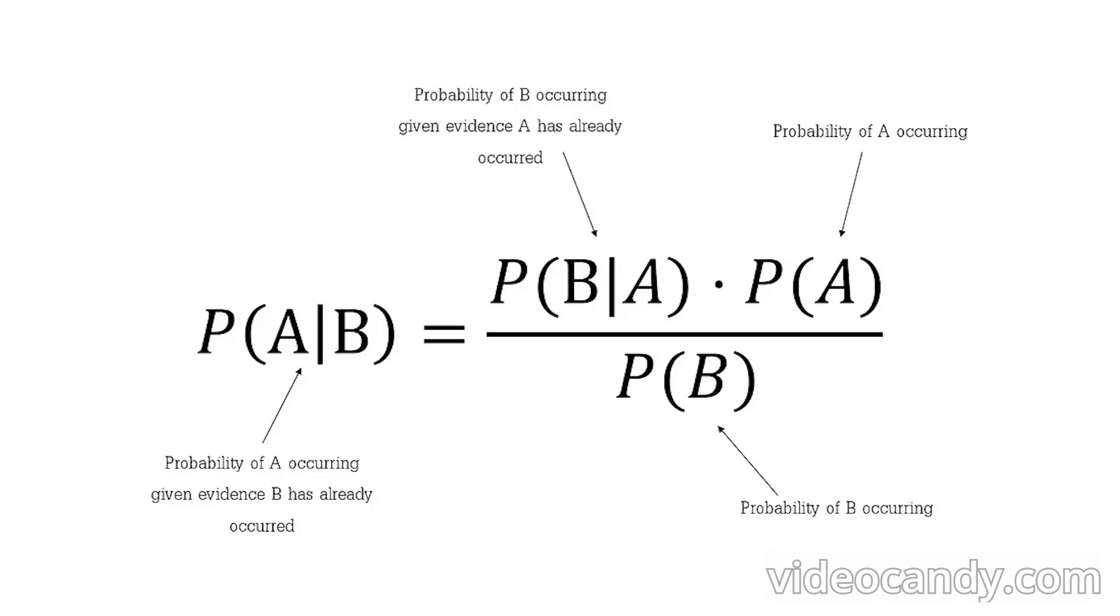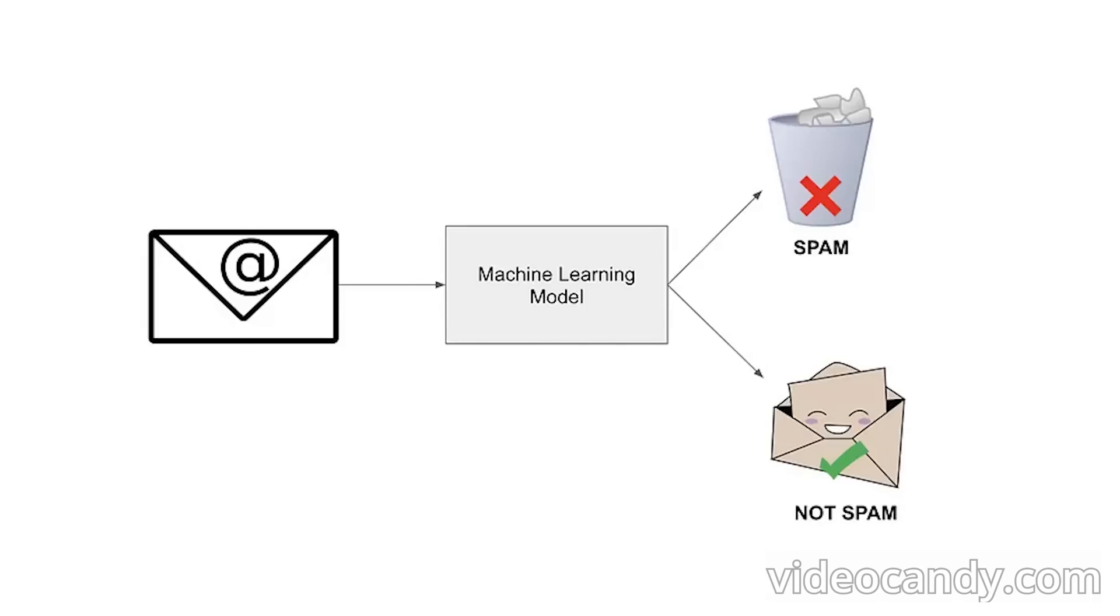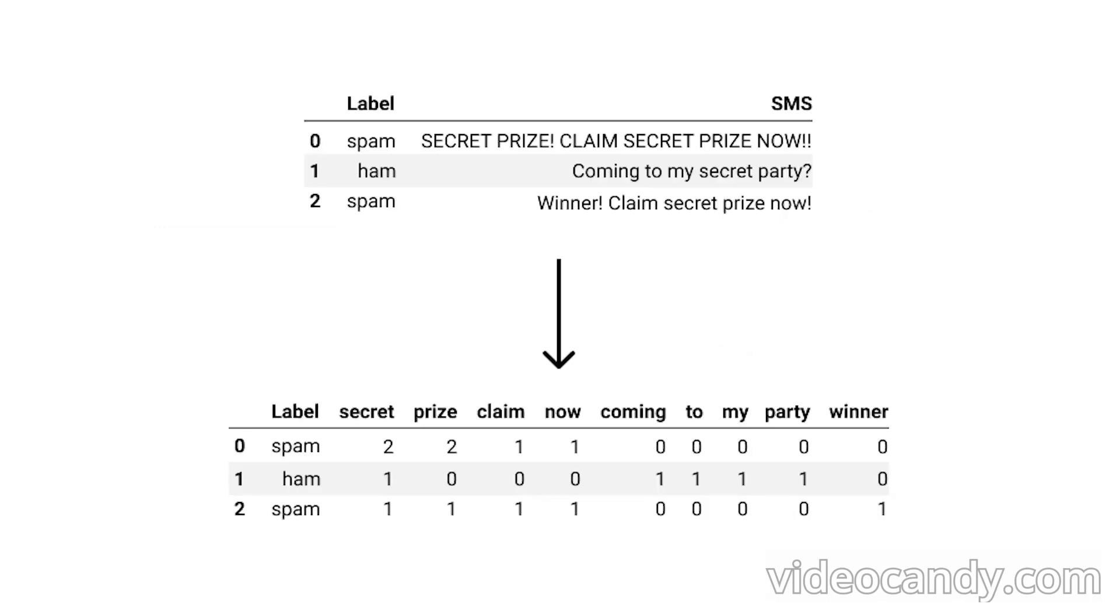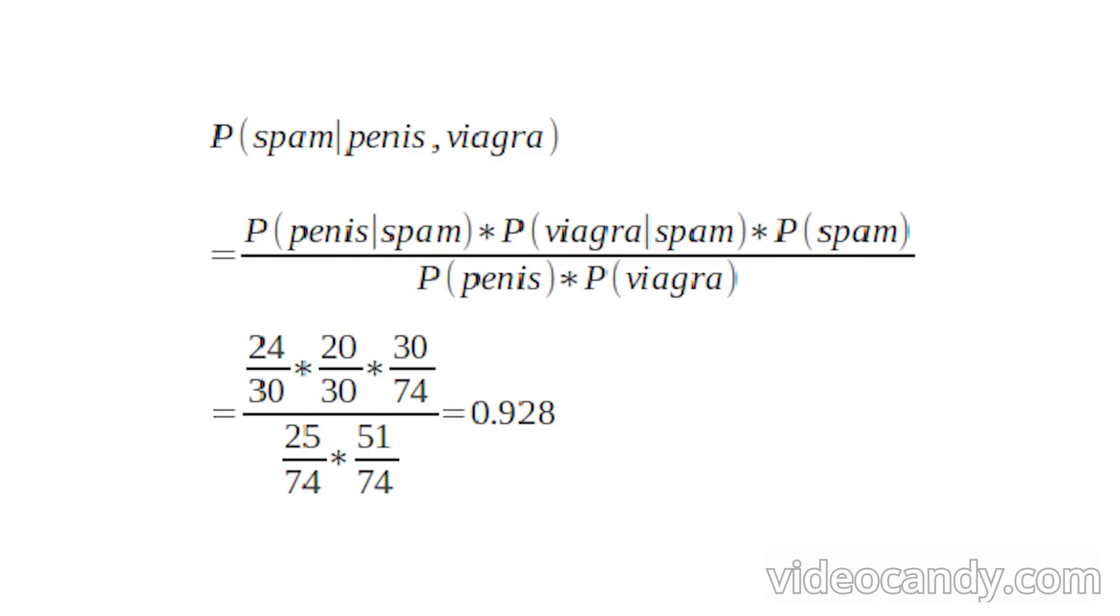I believe it's easiest to understand naive Bayes with an example use case that it is often used for, spam filters. We can train our algorithm with a number of spam and non-spam emails and count the occurrences of different words in each class, and thereby calculate the probability of certain words appearing in spam emails and non-spam emails. We can then quickly classify a new email based on the words it contains by using Bayes' theorem.